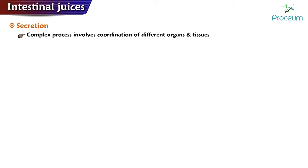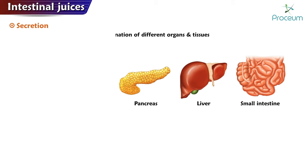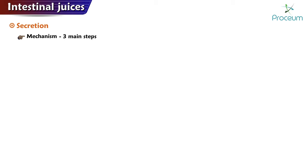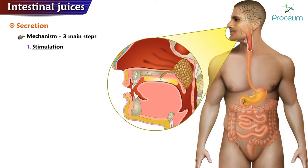The secretion of intestinal juices is a complex process that involves coordination of several different organs and tissues, including the mouth, stomach, pancreas, liver, and small intestine. The mechanism of secretion can be divided into three main types: stimulation, coordination, and regulation.